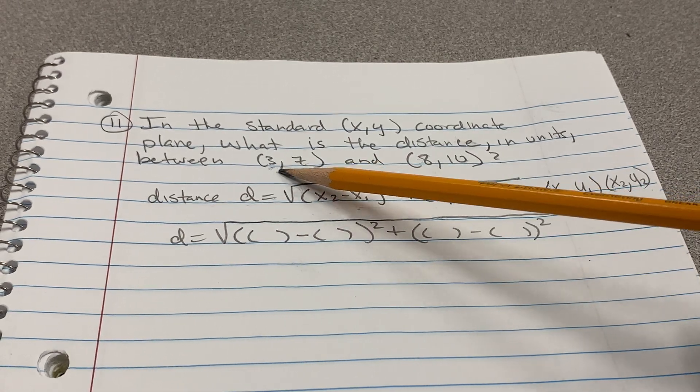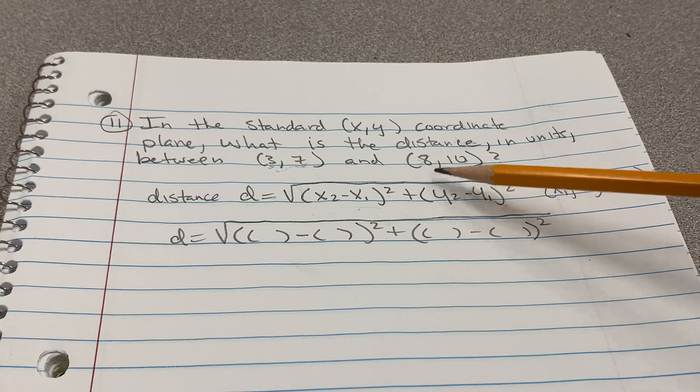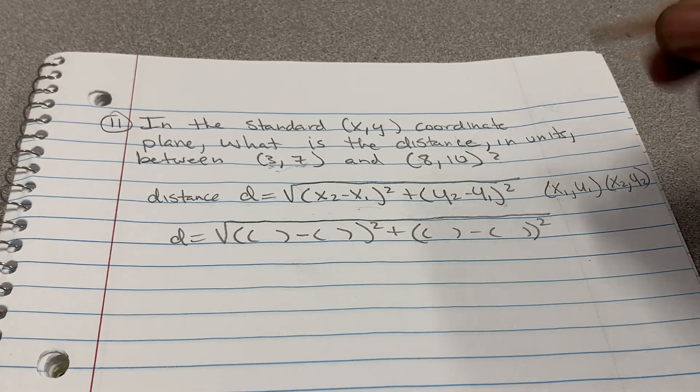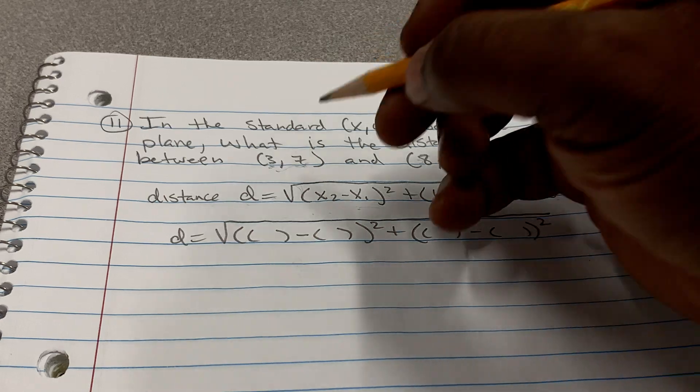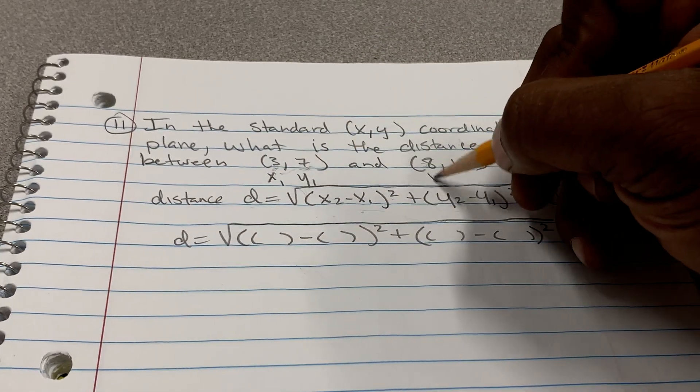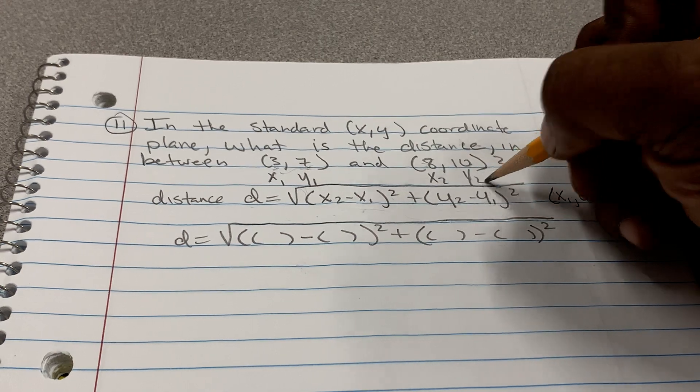So all we have to do, they gave us these two points with four digits, and that's all we have to put in here. As we can see, what I like to tell my students is try to label these. This is x1, this is y1. This is x2, this is y2.